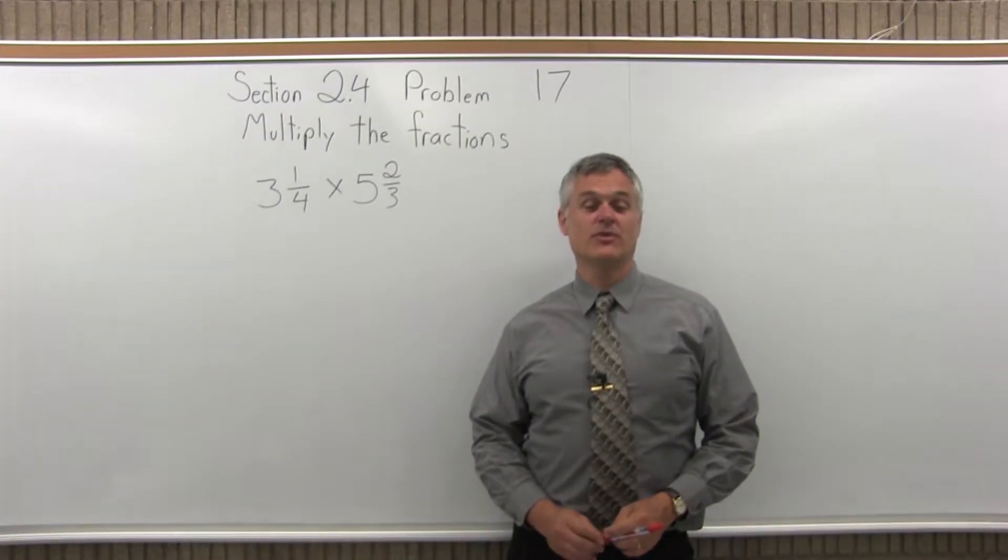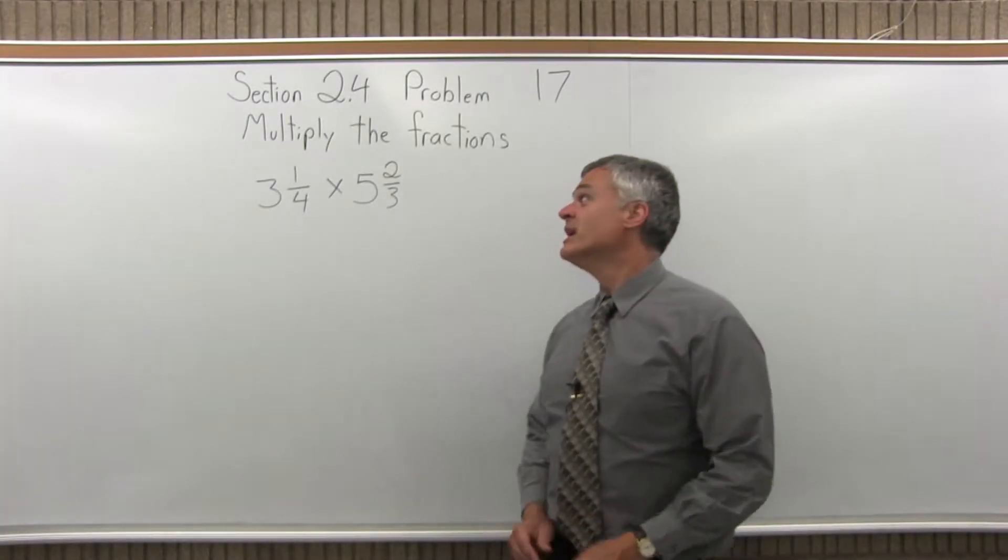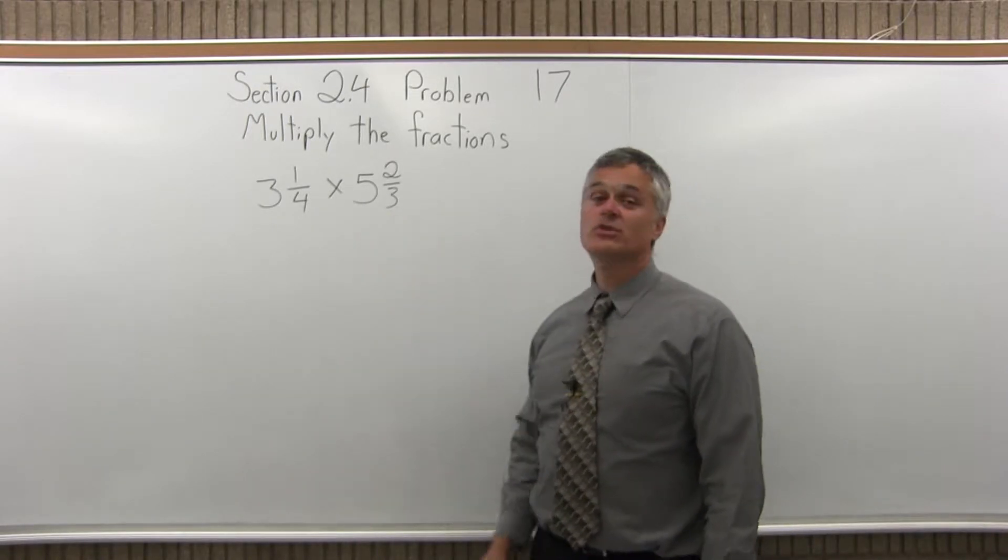This is Section 2.4, Problem 17. It says multiply the fractions, and we have 3 and 1 fourth times 5 and 2 thirds.